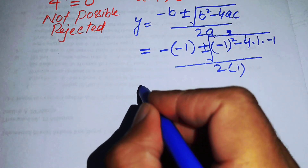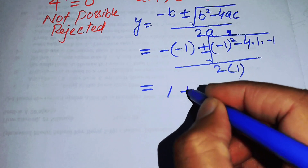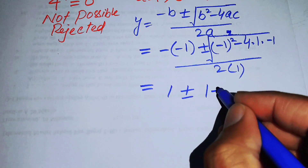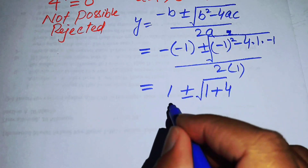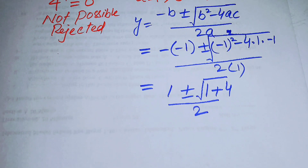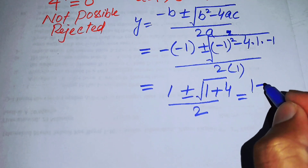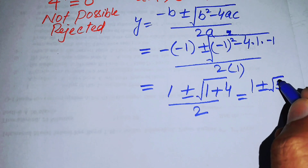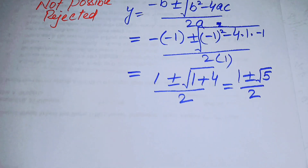Simplifying these terms: minus 1 squared is positive 1, and minus 4 times 1 times minus 1 gives plus 4, so we obtain 1 plus or minus the square root of 5, all over 2. This again gives us two cases.